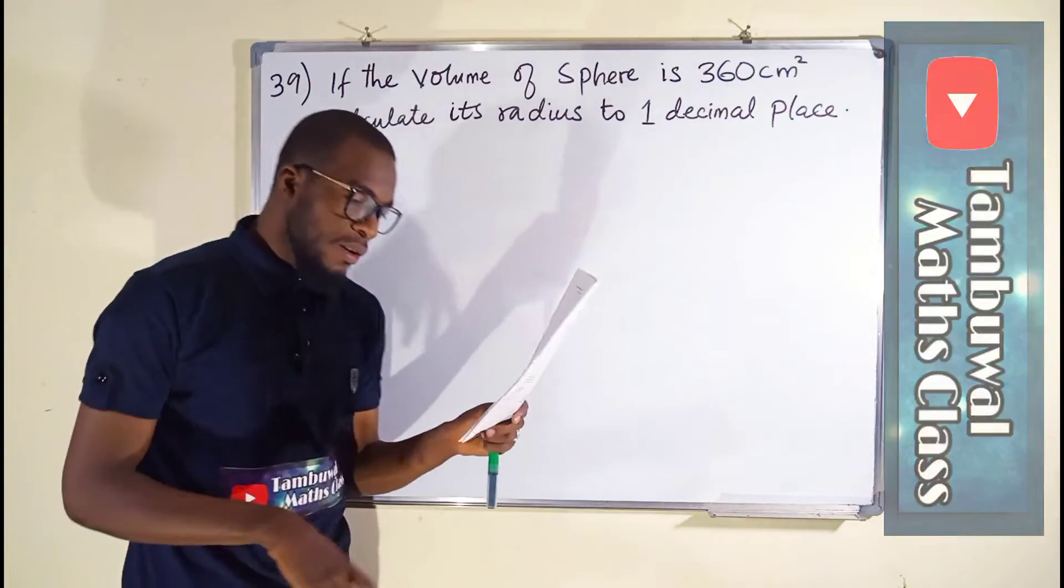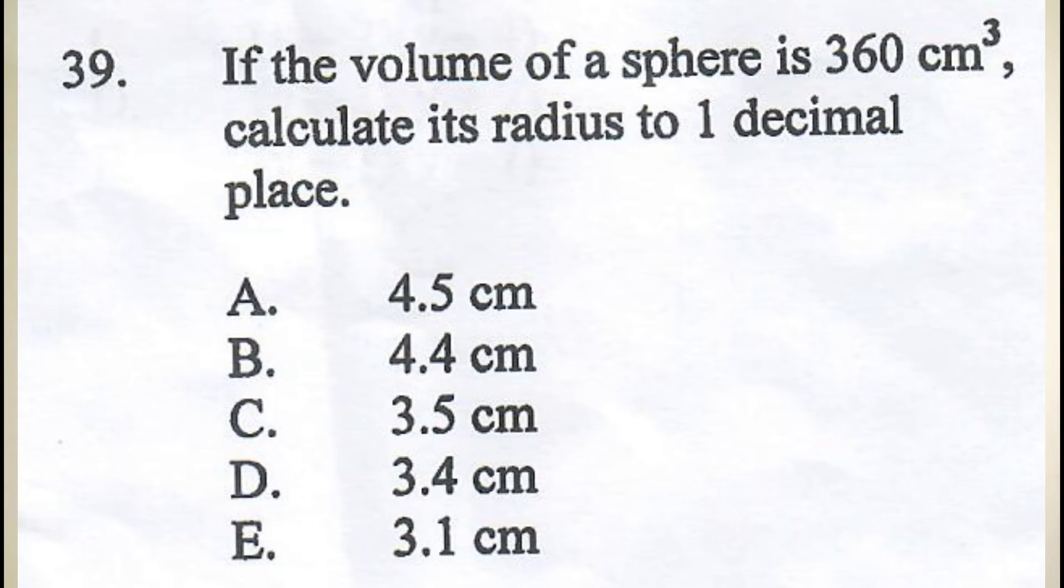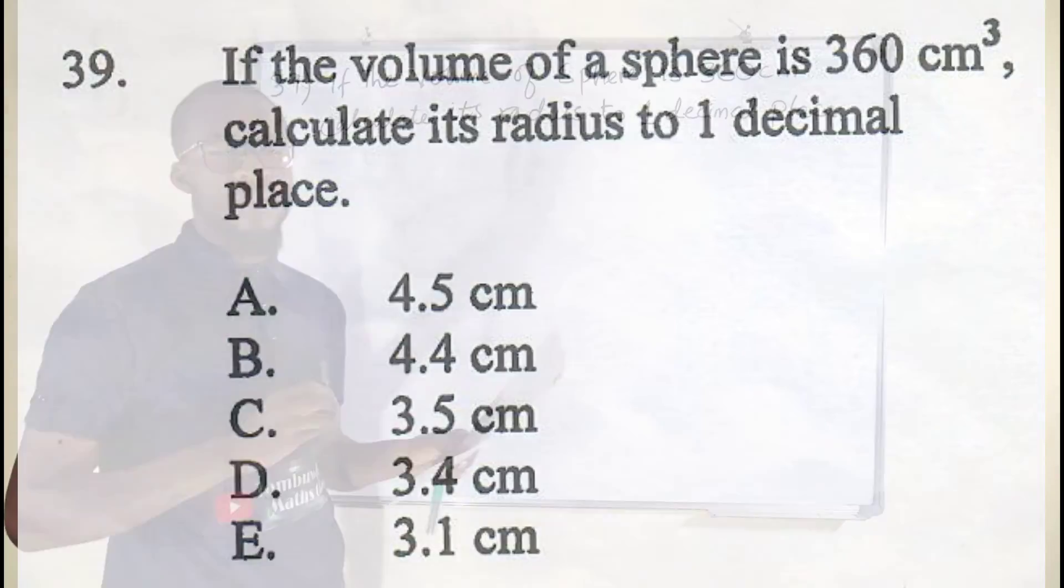Question number 39 reads: if the volume of a sphere is 360 cm³, calculate its radius to 1 decimal place.